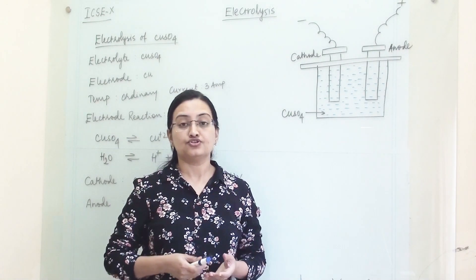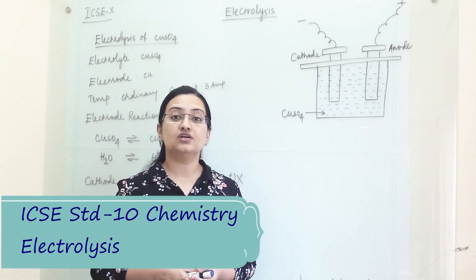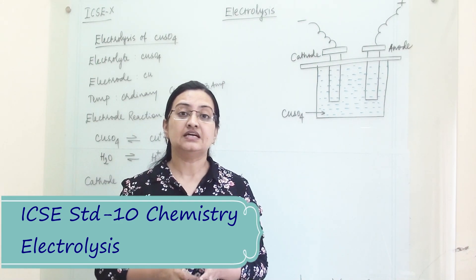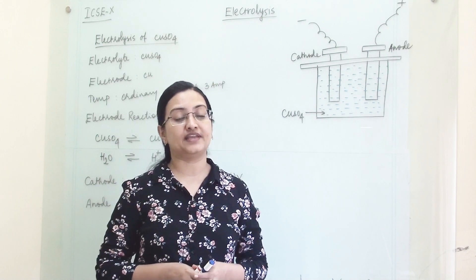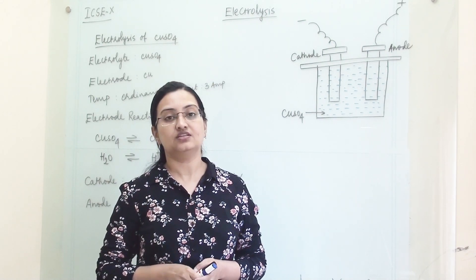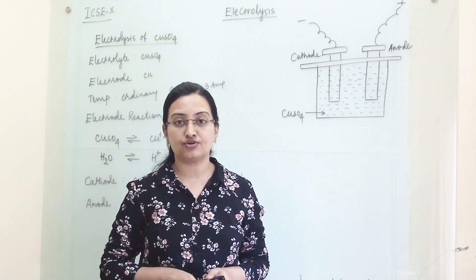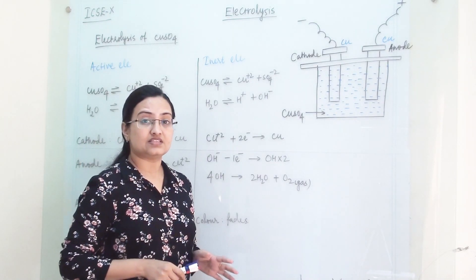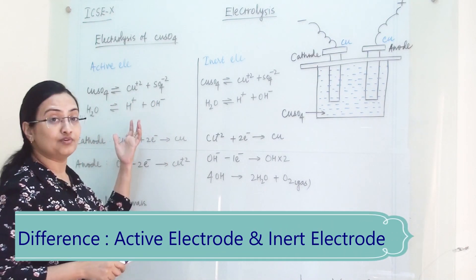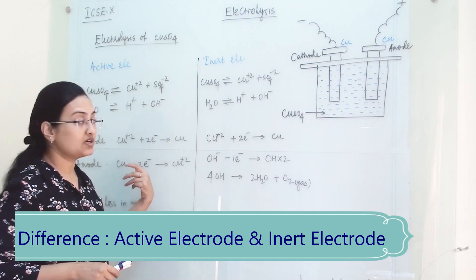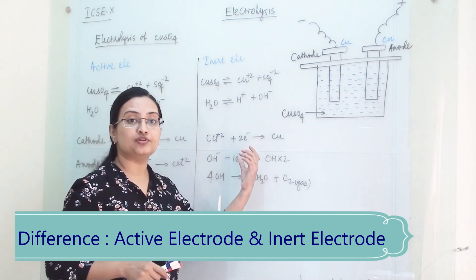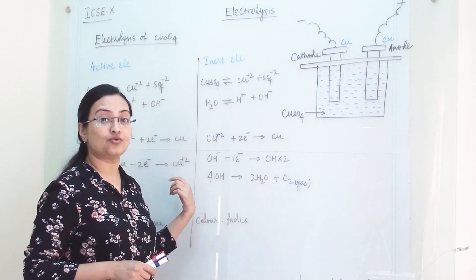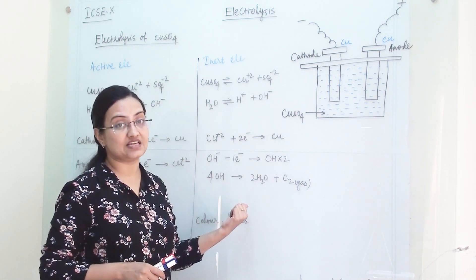Welcome to Learn Yourself. Today we are going to learn about electrolysis of copper sulphate and we will learn how the electrode will take part in cell reaction. These topics are from ICSE standard 10 syllabus. Now let us understand when an active electrode is there what will be our product, and when an inert electrode is there what will be our product and what will be the difference in cell reaction.